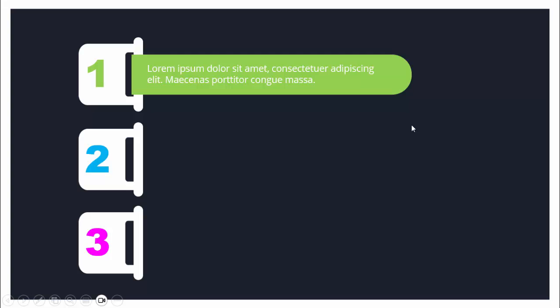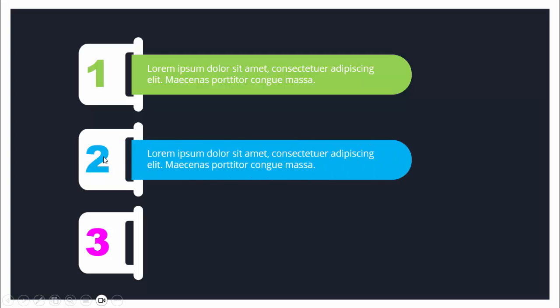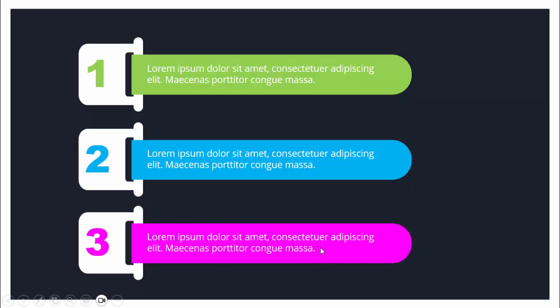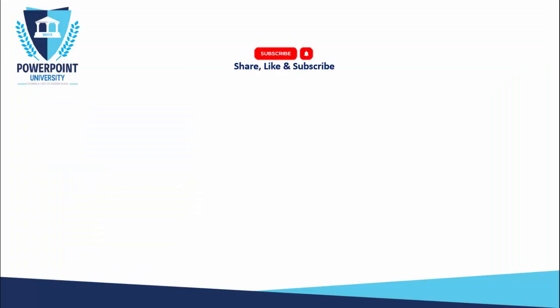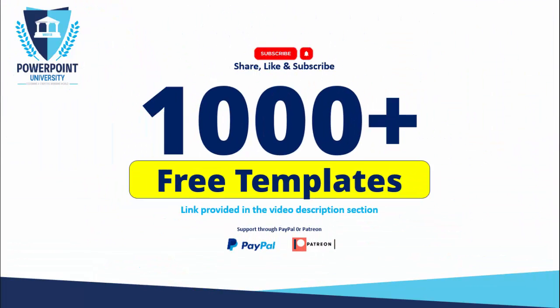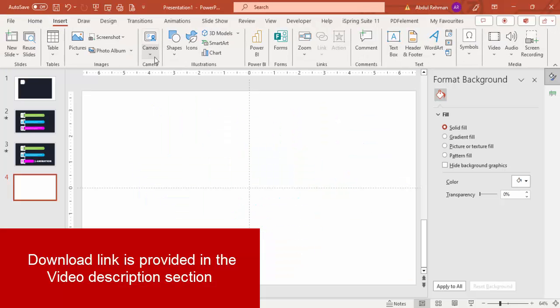When I click, the second option comes with a different color, and then the third. Depending on the requirement you can increase or decrease the number of options. Please share, like, and subscribe to my channel — the only PowerPoint channel on YouTube where you can get 1000-plus free templates absolutely free, with links in the video description. You can also support my channel through PayPal or Patreon. Let's start the tutorial.